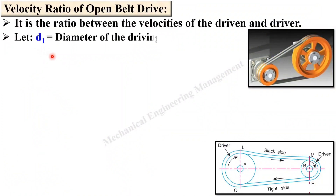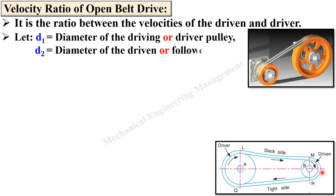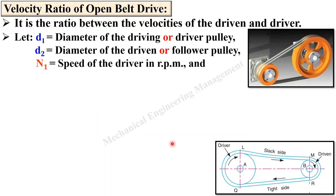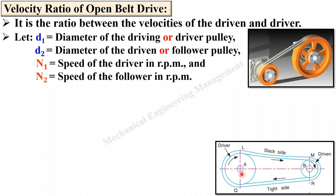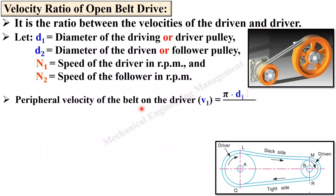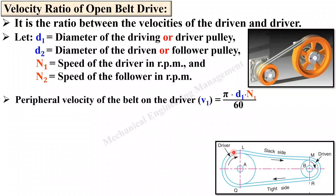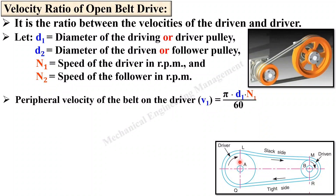If I want to write it mathematically: let D1 be the diameter of the driver pulley and D2 be the diameter of the driven pulley, also called the follower pulley. N1 is the speed of the driver, generally in revolutions per minute (rpm), and N2 is the speed of the follower, also in rpm. Now let us find the peripheral velocity of the belt on the driver. If the peripheral velocity of the belt on the driver is π·D1·N1 / 60, using the formula V = π·d·N / 60, here the belt is attached to the driver so we use D1 and N1.